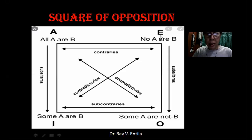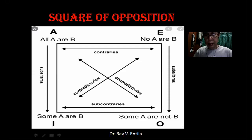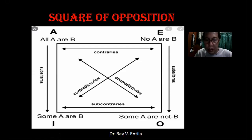'I deny.' So E is the universal negative — no A are B. This is also universal, but the quality is negative. And then we have O, which is the particular negative: some A are not B. The quality is negative and the quantity is particular, whereas in E the quantity is universal.